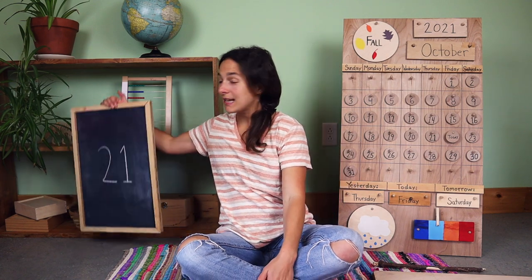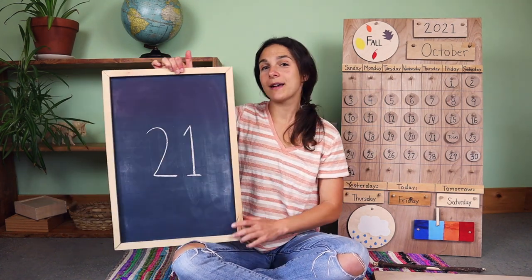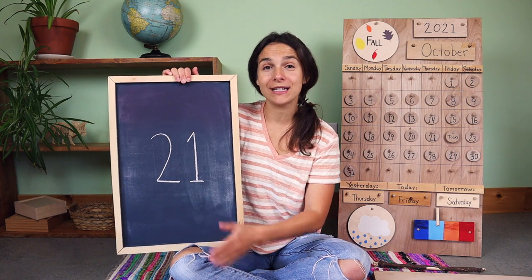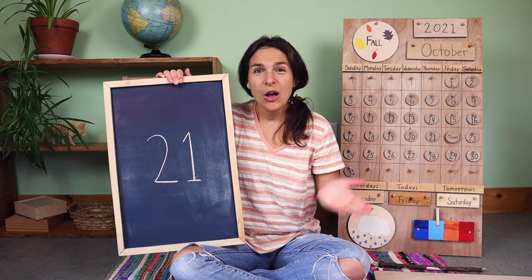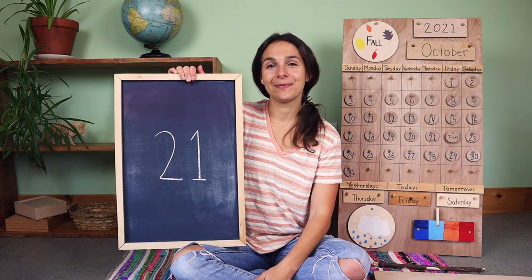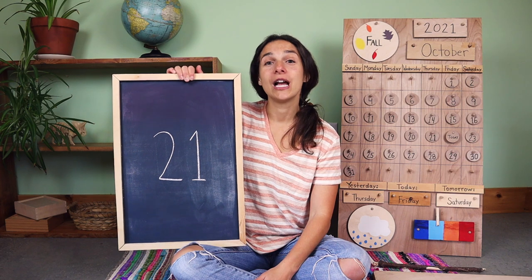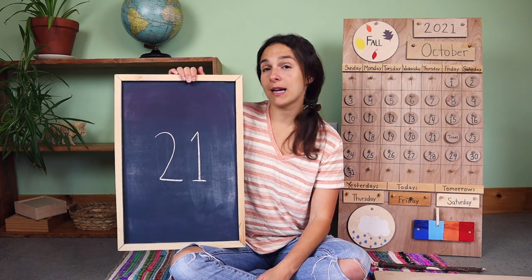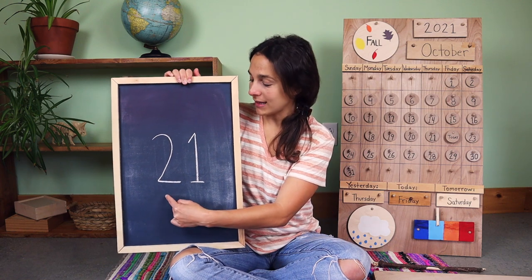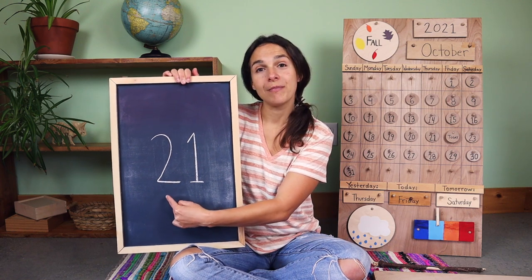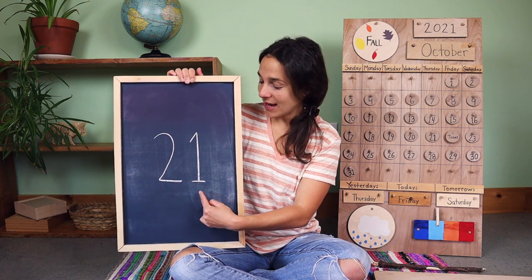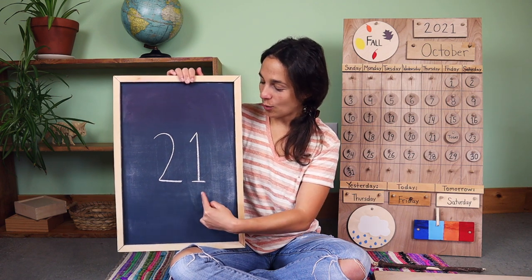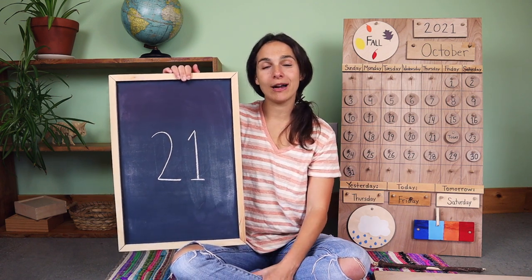And here is the number of the week. This will also be the last time talking about this double digit number. What number is it? Twenty-one. That's right. When you write the number 21, first you write the number two, and then you write the number one — two, one — twenty-one.